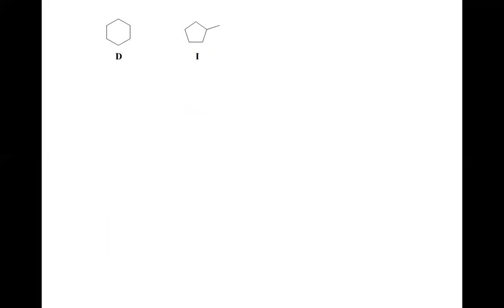For the fifth pair D and I: their molecular formulas both match as C6H12, confirming they are isomers. Both compounds are in ring form, but one is a larger ring and one is a smaller ring. Therefore they are called ring isomers.